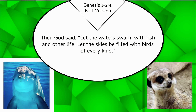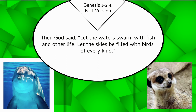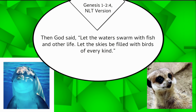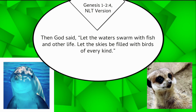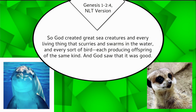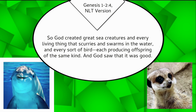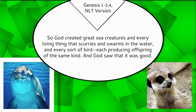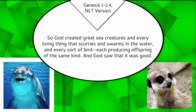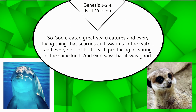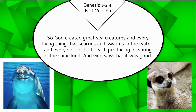Then God said, Let the waters swarm with fish and other life. Let the skies be filled with birds of every kind. So God created great sea creatures and every living thing that scurries and swarms in the water, and every sort of bird, each producing offspring of the same kind. And God saw that it was good.